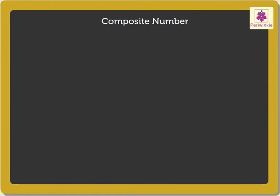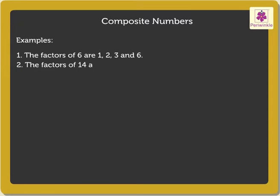Composite Numbers. Look at the examples. The factors of 6 are 1, 2, 3 and 6. The factors of 14 are 1, 2, 7 and 14.